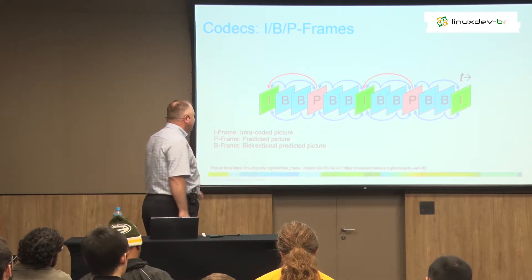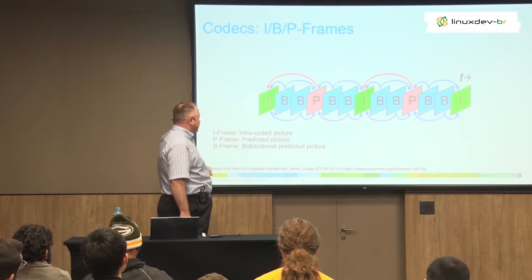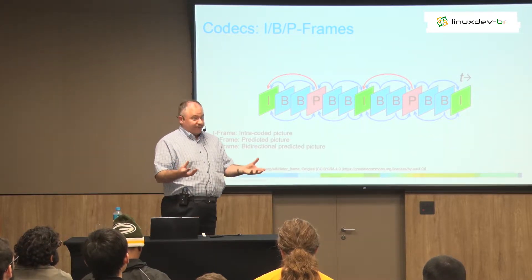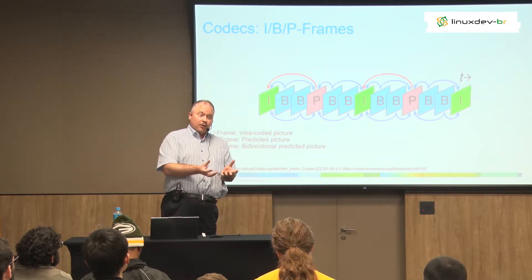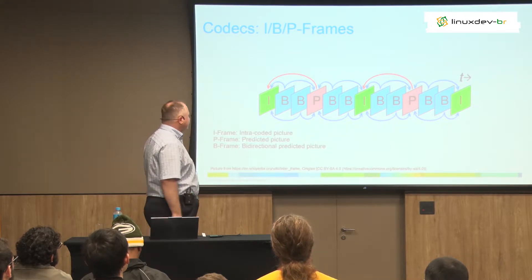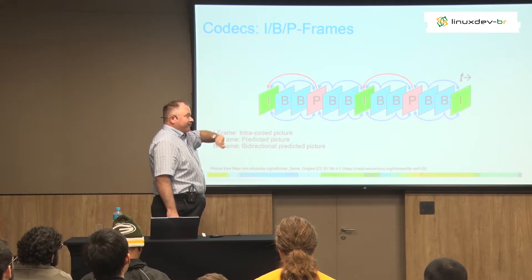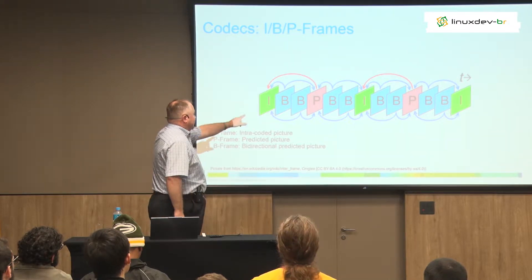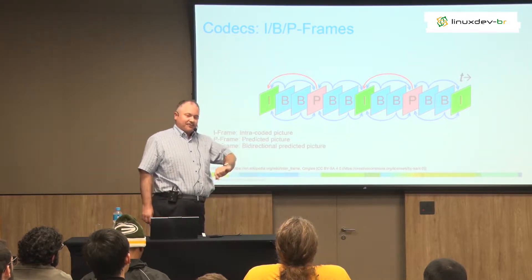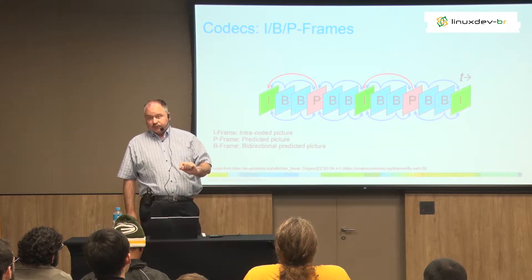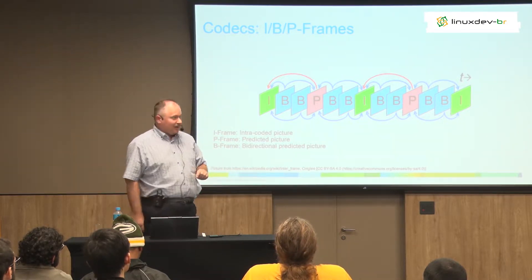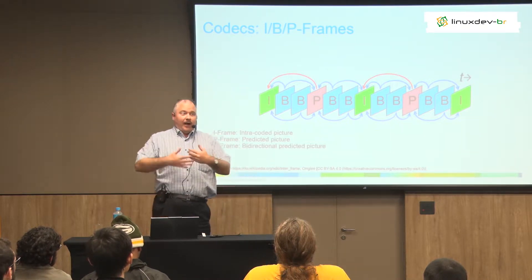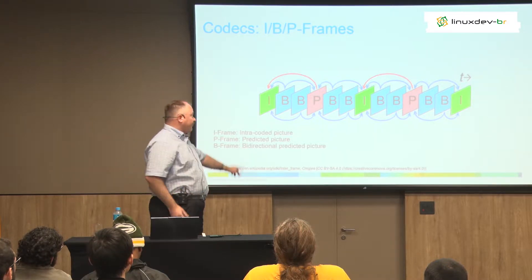Then you get B-frames and P-frames. P-frames are only dependent on the iframe — basically the difference between that frame and your original iframe, so you only encode the difference. That means you can usually get a much smaller, much better compression ratio. B-frames are actually dependent on an iframe and a P-frame, so they are bidirectional and can achieve still better compression. B-frames are useless when you do video conferencing — because you can't decode a B-frame until you have both the I and P-frames, so it will increase latency. If you have video conferencing, you only have iframes and P-frames and never B.